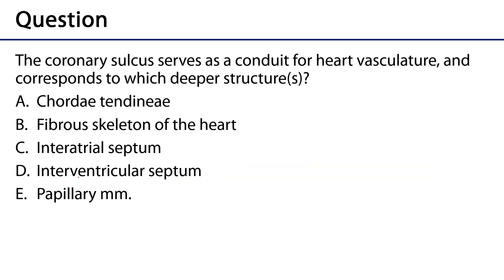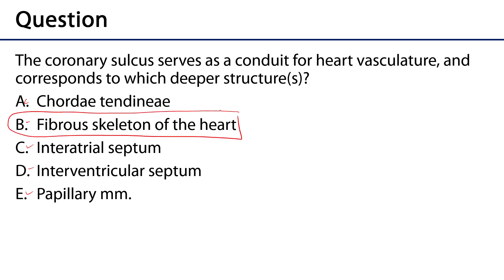That leads us to the assessment question: the coronary sulcus serves as a conduit for heart vasculature and corresponds to which deeper structures — the chordae tendineae, the fibrous skeleton of the heart, the interatrial septum, the interventricular septum, or the papillary muscles? The correct answer is B, the fibrous skeleton of the heart, in particular the atrioventricular valves, which comprise the bulk of the fibrous skeleton of the heart. Thank you very much for your time.